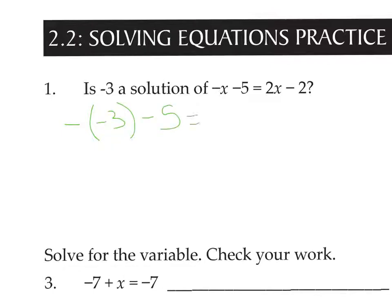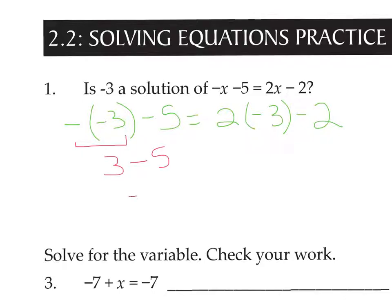Minus 5 equals 2 times x, which is negative 3, minus 2. Then we simplify. If it is a solution, both sides should come out to be the same. The opposite of negative 3 is positive 3. Positive 3 minus 5 is negative 2.